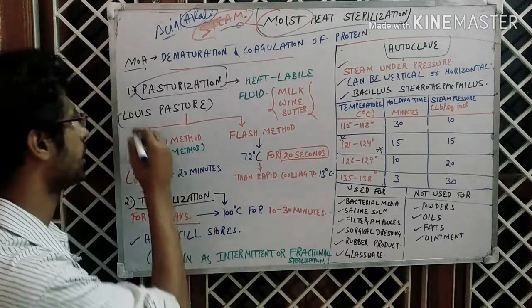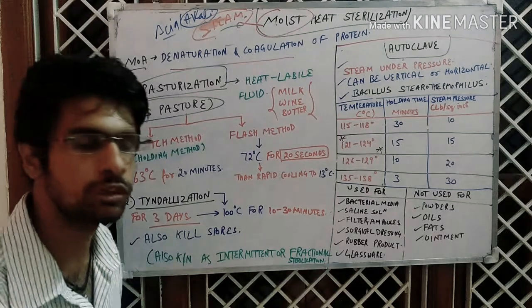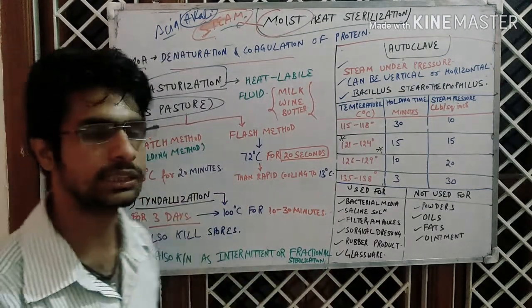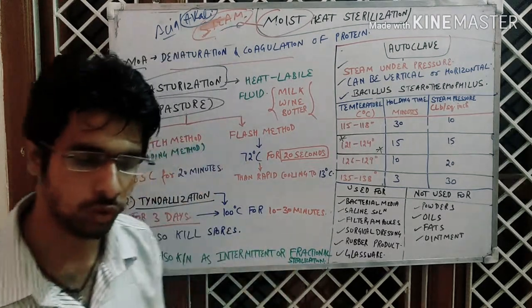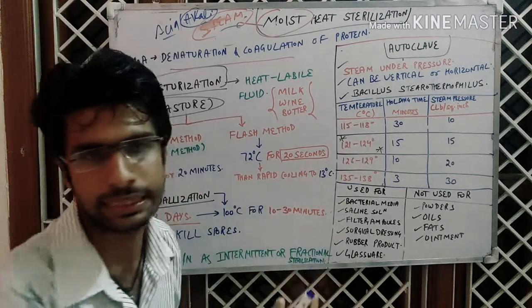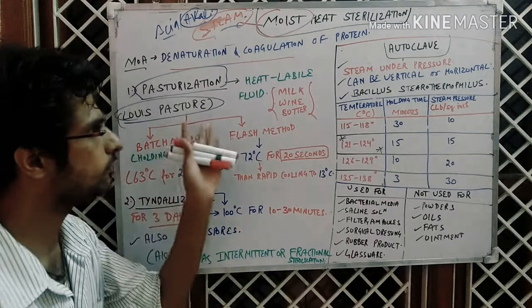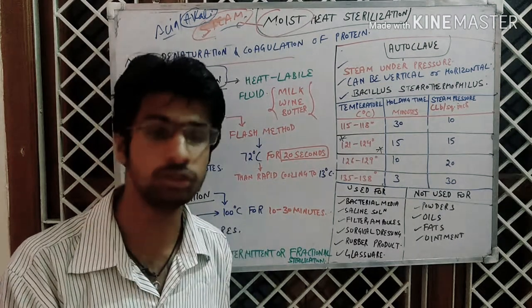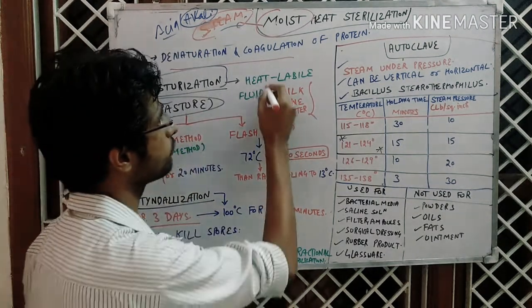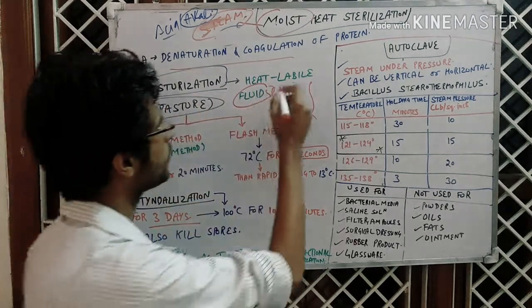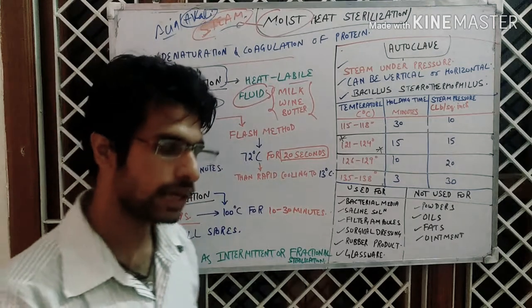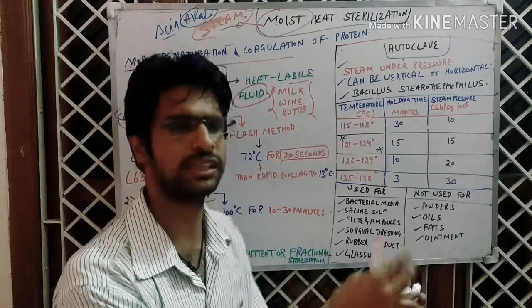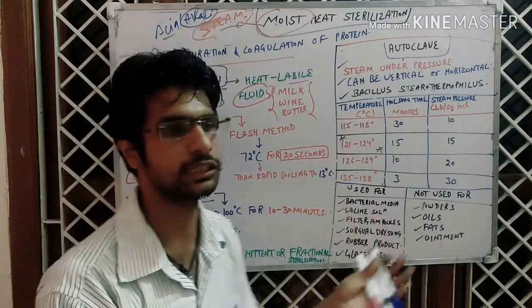Pasteurization is the technique given by Louis Pasteur. He invented this technique mainly for wines. This technique is used for heat labile fluids — you have to note that these are fluids, heat labile fluids. You get these in half-liter polyethylene packs of pasteurized milk in various confectionery shops or mother dairy plants.